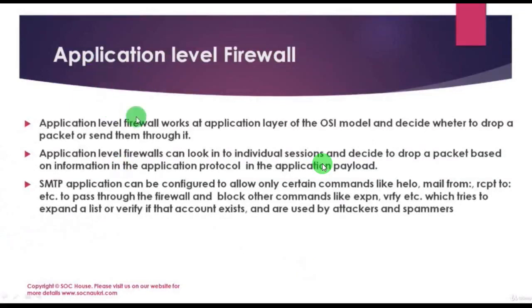Application Level Gateway: An application level firewall works at the application layer of the OSI model and decides whether to drop a packet or send it through. It is based on the application information available in the packet. Application level firewall ensures malformed packets with protocol attacks — for example, an attack over HTTP that violates protocol policies like sending a known exploit in the header field or an overly long string with known characters in the host field — would be dropped because they have been tampered with by the attacker.